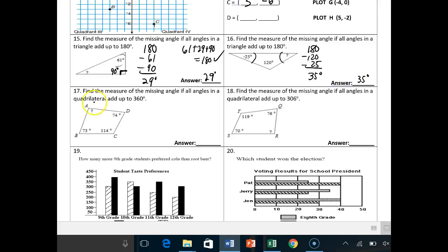In a quadrilateral, they add up to 360. So something with four sides, they add up to 360. You do the same thing. 360 minus 74 minus 114 minus 73. And then the remaining amount is what you have for your last angle. In this case, it's 99 degrees. I'll let you figure out number 18 on your own.